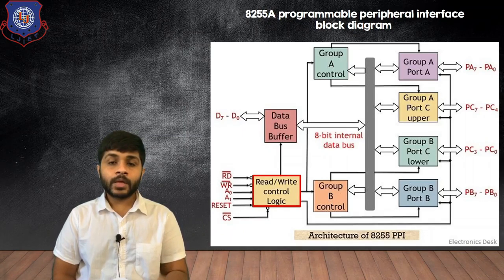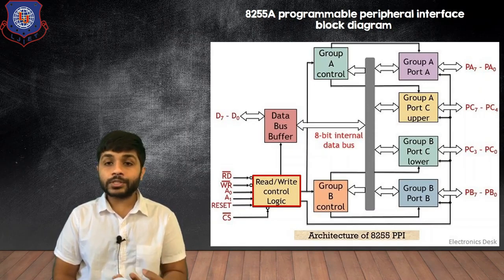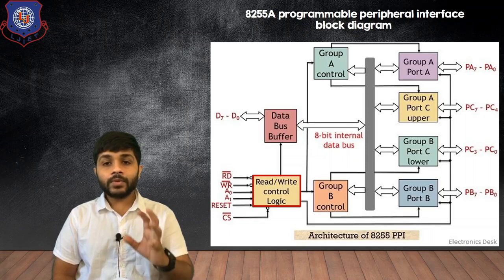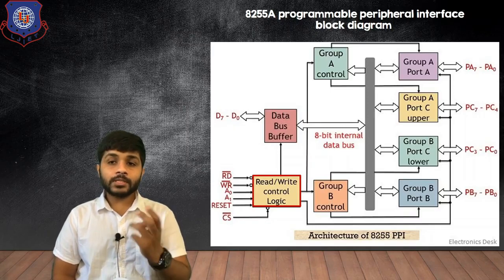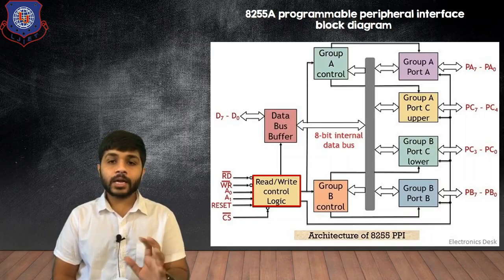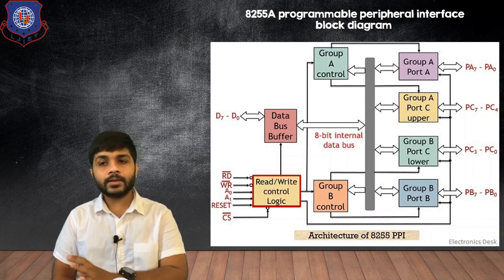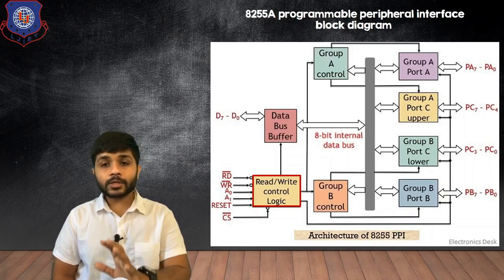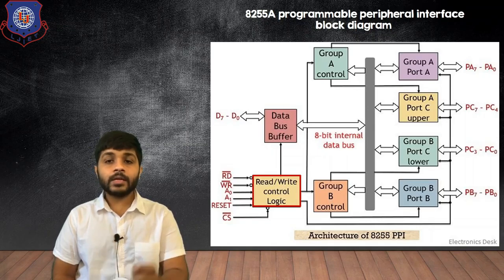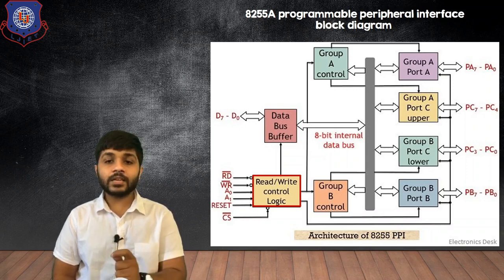Then there are A0 and A1. In the 8255A there are three ports — Port A, Port B, and Port C — and the processor can communicate with one port at a time. To communicate with a particular port, that port needs to be selected using A0 and A1, so one of the three ports can be selected. There is also a reset pin: when the microprocessor sends a reset signal, the 8255A will be reset. There is also a chip select pin. Chip select means that if the microprocessor wants to communicate with the 8255A, the prerequisite is that the chip must be selected, and to select it, the microprocessor sends a signal to the chip select pin.